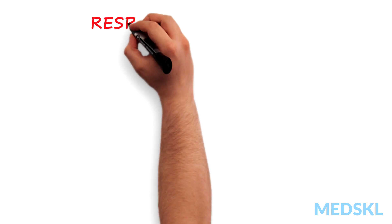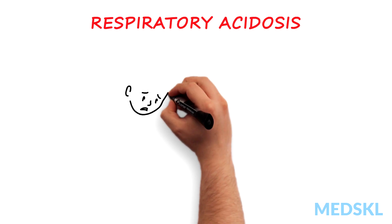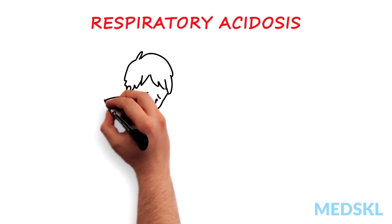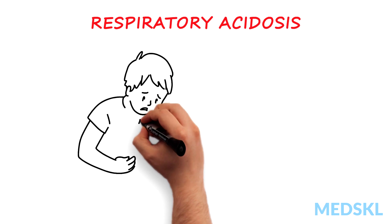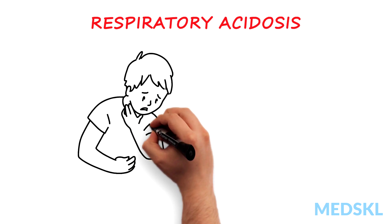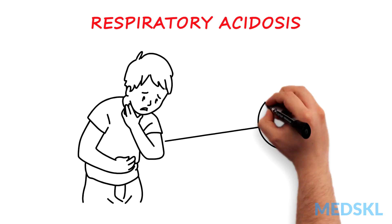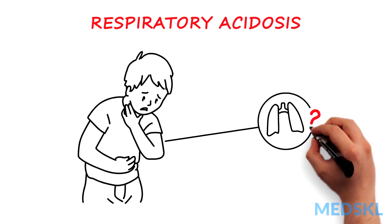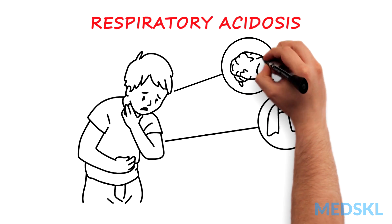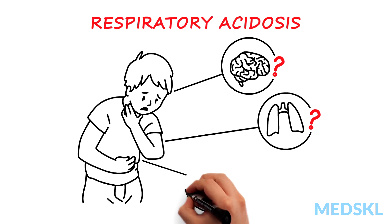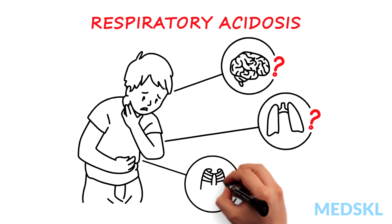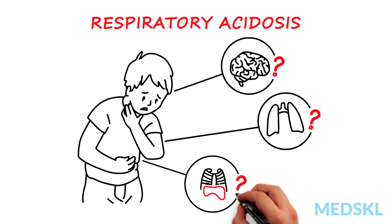Respiratory acidosis develops when alveolar ventilation is impaired and can be caused by disorders of the lung or a failure of ventilation from depression of the central respiratory center or neuromuscular disease.